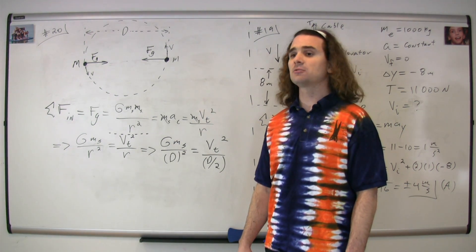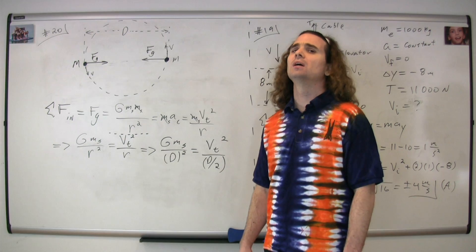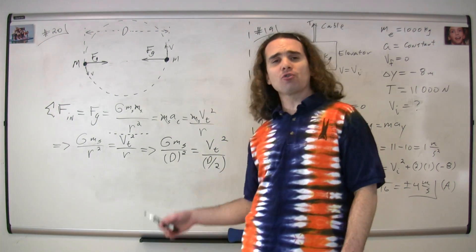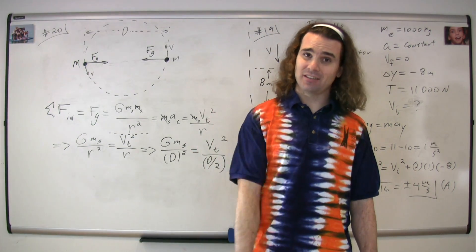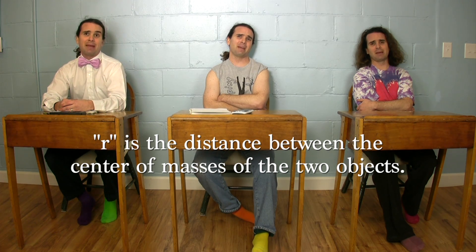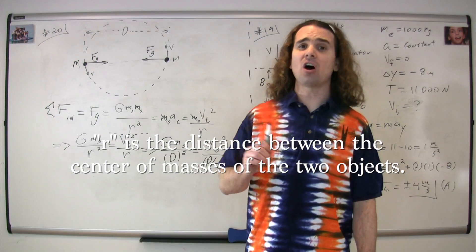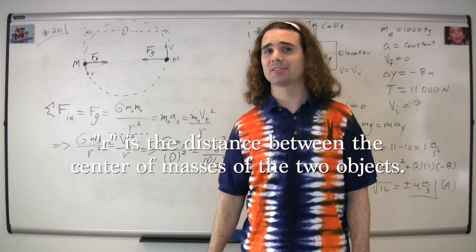Yes, Bo? 'Doesn't r always stand for radius?' Class, in Newton's universal law of gravitation, or the big G equation, r is not the radius. R is the distance between the center of masses of the two objects.